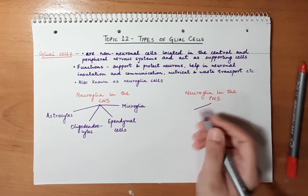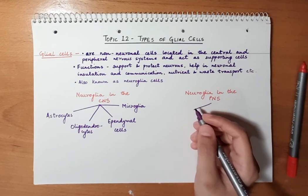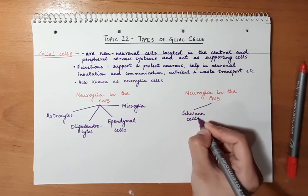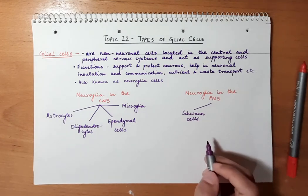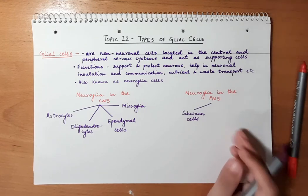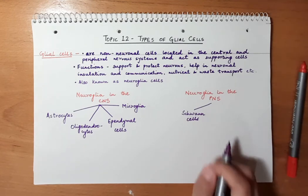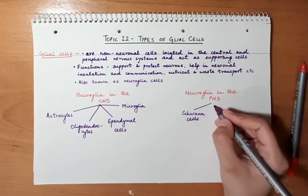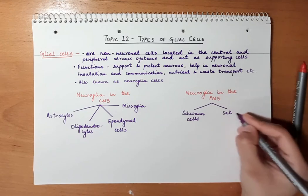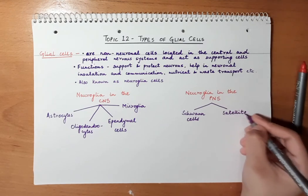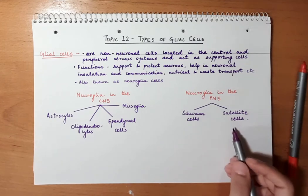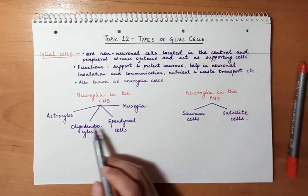In the peripheral nervous system there are two types of glial cells. The first are Schwann cells, which form the myelin sheath in the neurons of the peripheral nervous system — important cells for myelin formation in the PNS. The second type are the satellite cells.